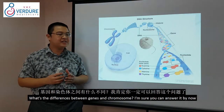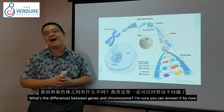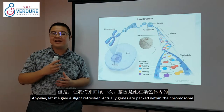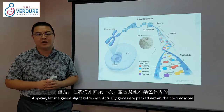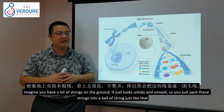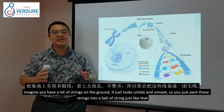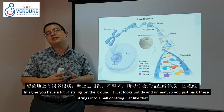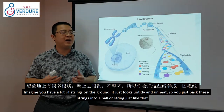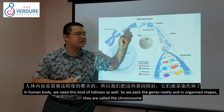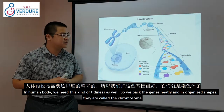What is the difference between genes and chromosomes? Genes are packed within the chromosome. Imagine if you have a lot of strings on the ground — it just looks untidy. So what you do is pack those into neat and tiny balls of string. In our human body, we need this kind of tidiness, so we pack the genes into neat, organized shapes called chromosomes.